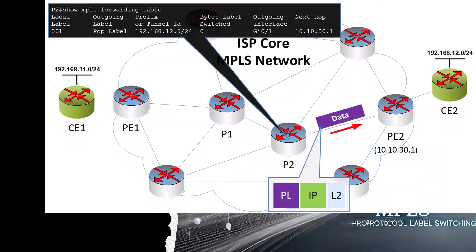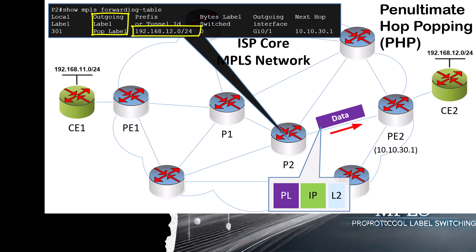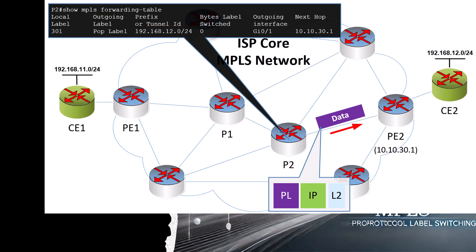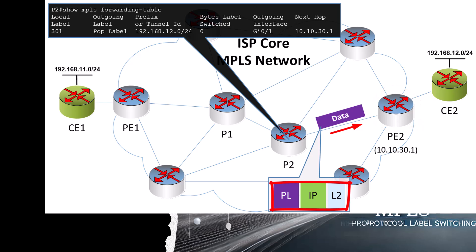Once the packet reaches the P2 router, it will look up the destination in the LFIB and see an outgoing label of pop label. This is the penultimate hop popping process that we talked about in the previous video. The last P router in the path, which in this case is P2, will pop the label — or in other words, remove the label — before it is sent to the final PE router, which is PE2. As you can see, the MPLS header is removed completely during the popping process, and thus the data arrives at PE2 with no label. That means PE2 will simply use traditional routing to get that packet to the destination, which is behind the CE2 router.